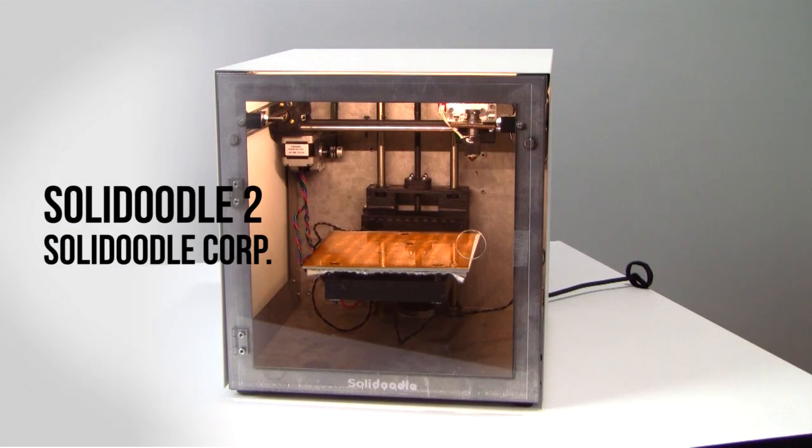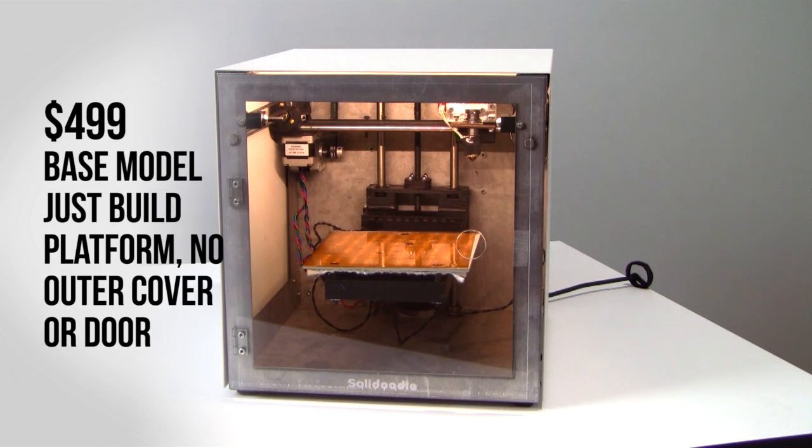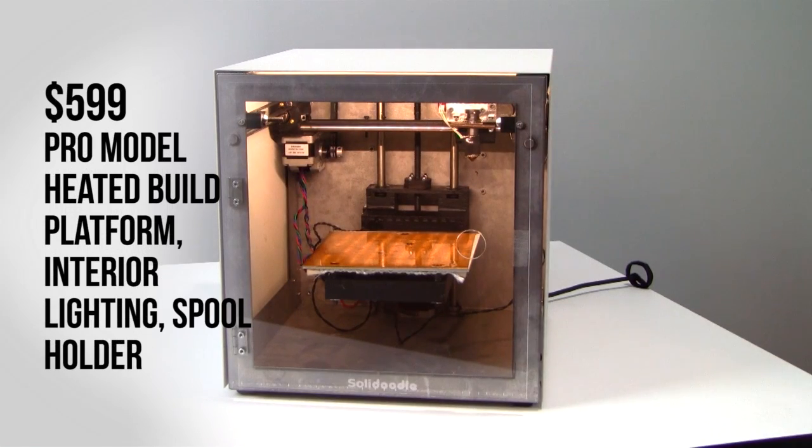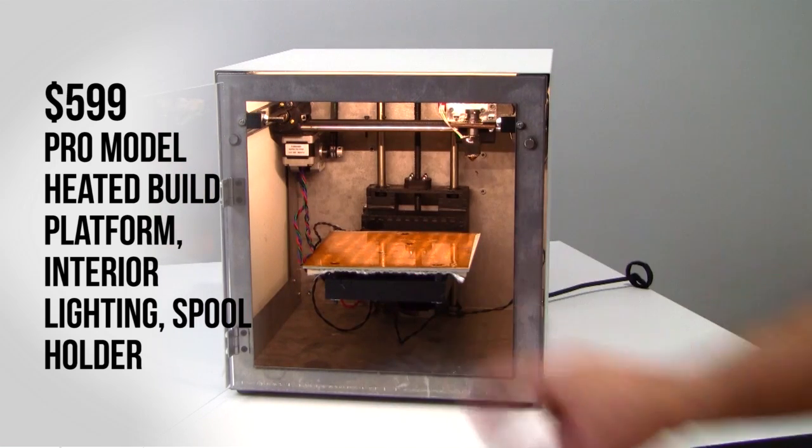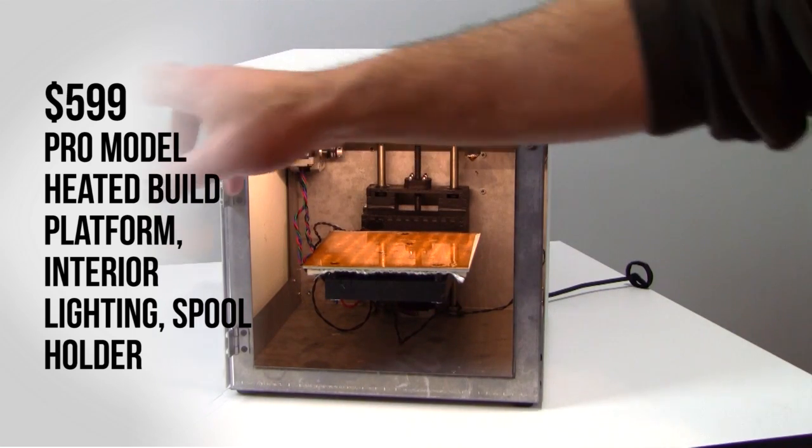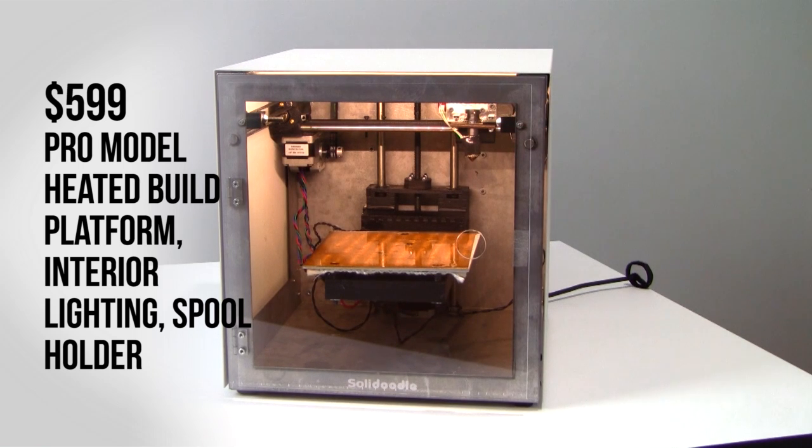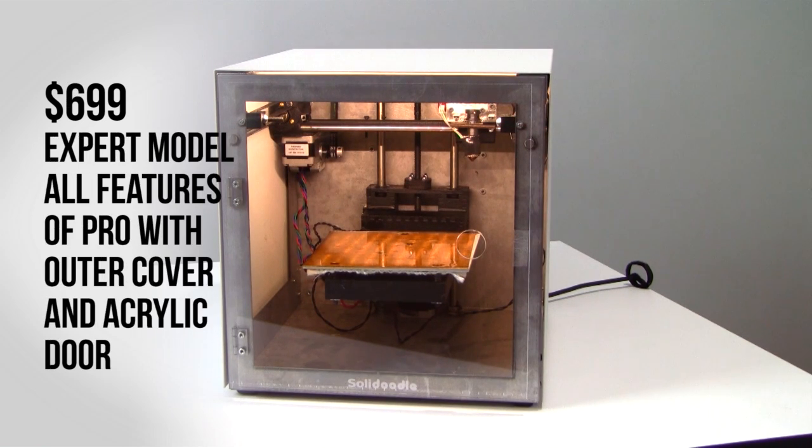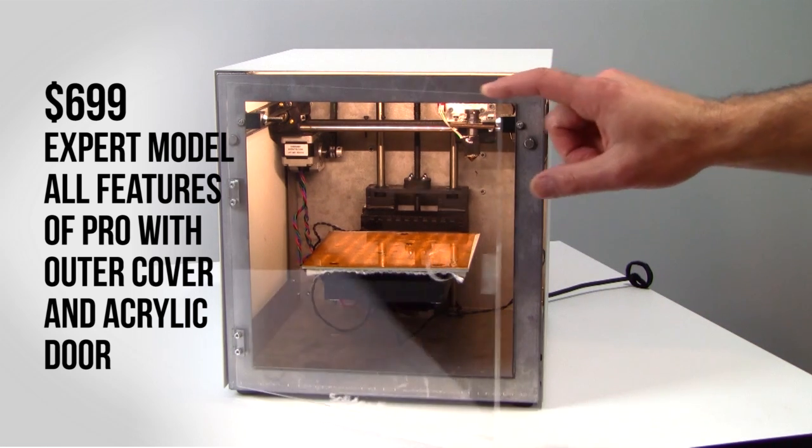Finally, this is the Solidoodle 2. Solidoodle has a very traditional 3D printer design approach with a boxy sheet metal frame and simple construction. You could say it's very much in keeping with the original RepRap design philosophy of open-source-based self-replicating machines. A no-frills version sells for $499 without the exterior metal casing or plexiglass door that you see here. For $599, however, you can get the Pro version, which gets you a heated build platform right here as well as an upgraded power supply. We'd highly suggest the heated build platform because it certainly helps minimize warping at the bottom layers of your builds. For $699, you get the Expert model, which is what you're looking at here with the exterior metal casing as well as that plexiglass door.